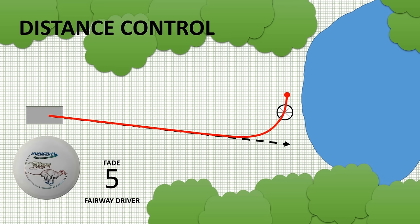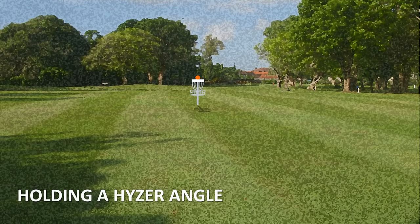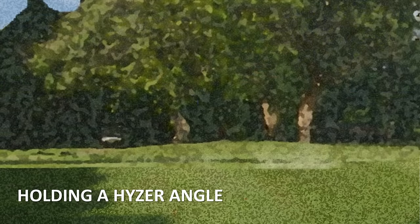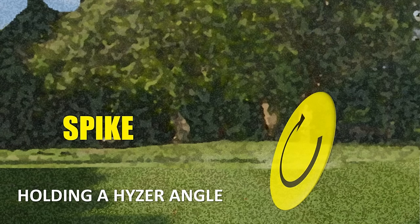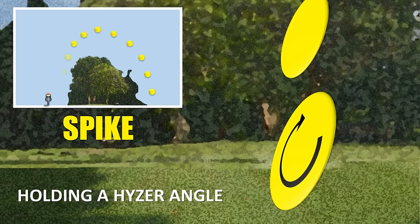Our third reason for choosing a high fade disc is for holding a hyzer angle. This can take on a lot of different shapes. Let's say you're close to the basket like this one, but have a significant obstacle in your way, and you choose to use a spike shot. A spike shot is thrown at a very steep hyzer angle, nearly an upward direction with the intention of going up and over with the disc landing in a very vertical position where you need a high fade disc to help ensure that it holds that hyzer angle through the whole flight.